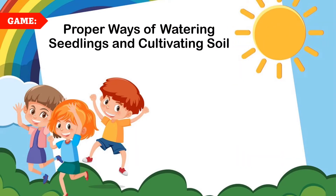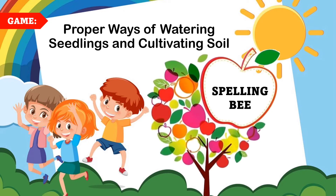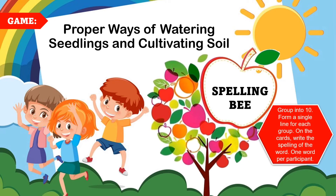Now I hope you are ready for this topic: proper ways of watering seedlings and cultivating soil. We are going to have a spelling bee. Group into 10, form a single line for each group, and on the cards your teacher gives you, write the spelling of the word — one word per participant — and this will be scored.